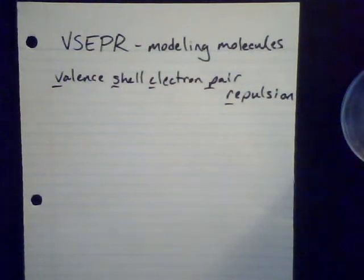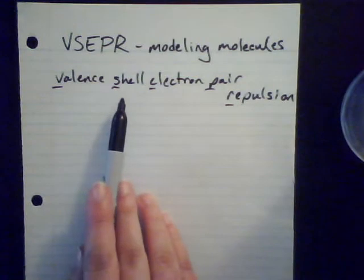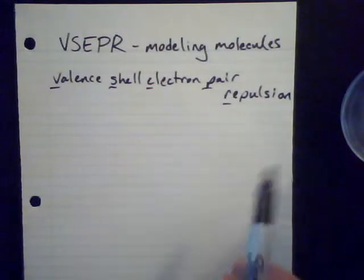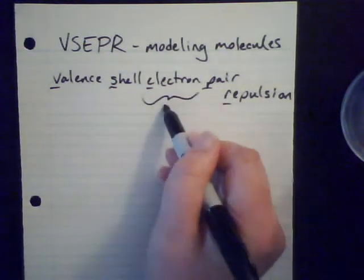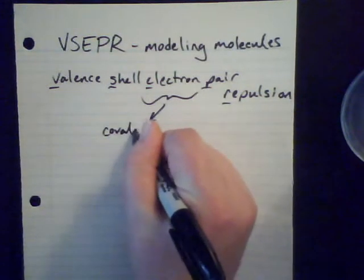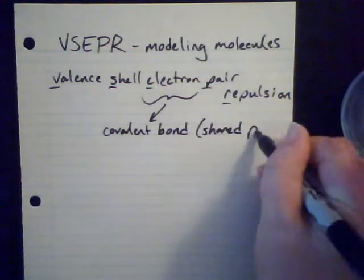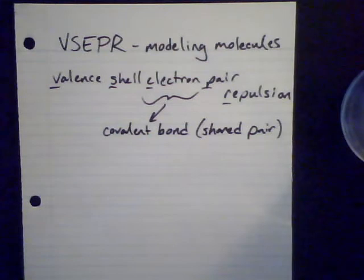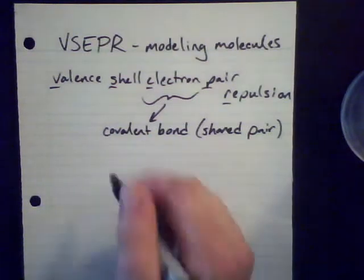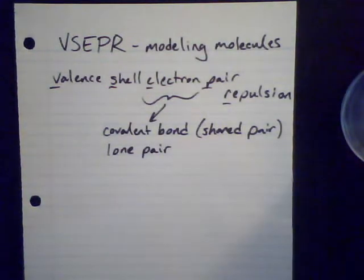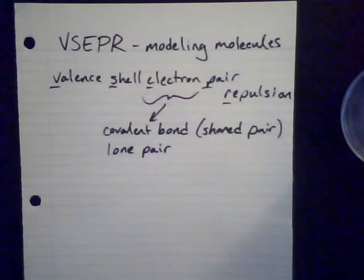Valence shell, remember, are the outermost highest energy electrons, so these are the ones that are involved in bonding. Electron pair refers to either a shared pair of electrons like a covalent bond, or a lone pair, which is an unshared pair — it's already paired up so we don't have to pair it up with anything. And repulsion just refers to the fact that these electrons are negatively charged, and like charges are naturally going to repel each other.